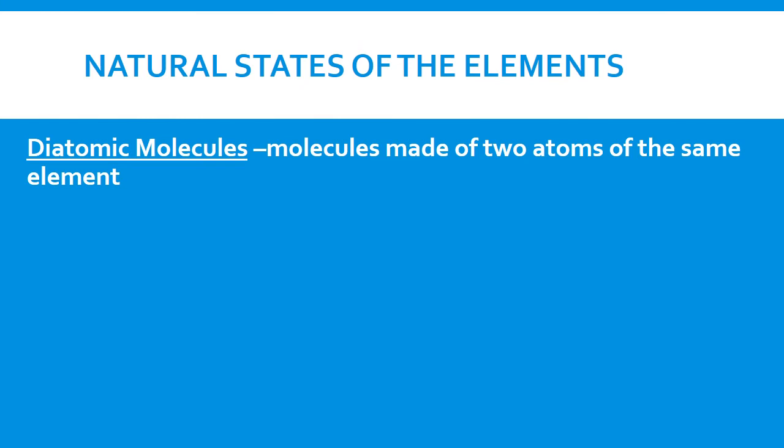The natural state of elements refers to the state of matter in which the elements can occur in nature or the state in which they occur in nature. And there are seven elements that exist as diatomic molecules. That means that they are made up of two atoms of the same element. And they are elements because they are made up of the same type of atoms.